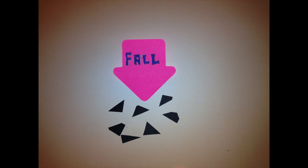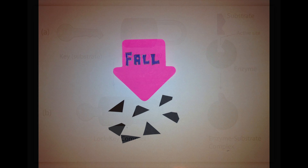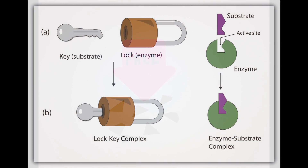The system in which enzymes work is often referred to as the lock and key system. This is where the enzyme and the substrate lock together. The substrate then breaks down into smaller products, leaving the enzyme unharmed, with the substrate having formed into its products.